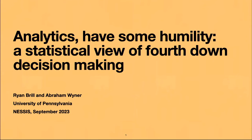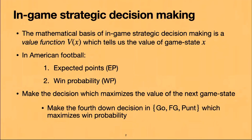This is going to be a fun one. The basis of in-game strategic decision-making in math is a value function, and you might want to make the decision which maximizes the value of the next game state. In football, these value functions tend to be win probability or expected points. Expected points says, given your game state, what's the expected value of the points of the next score in the half? And you might want to, for example, make the fourth-down decision which maximizes win probability.